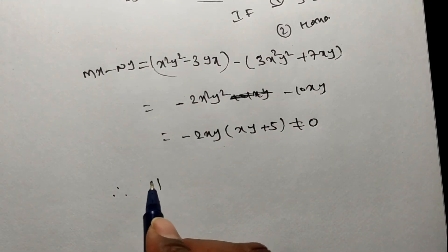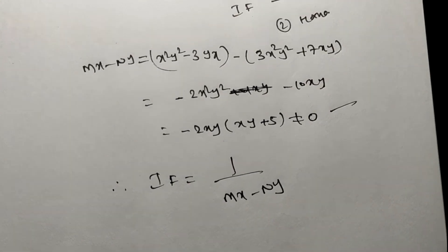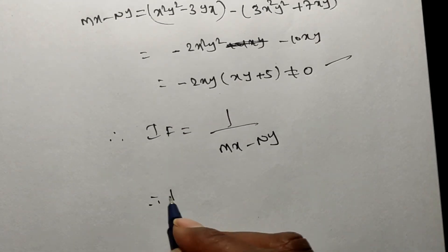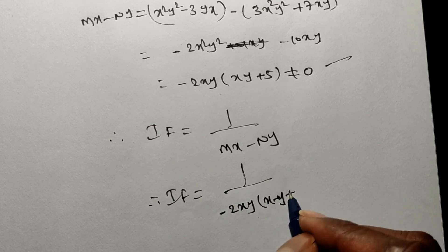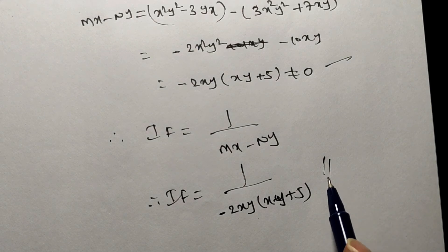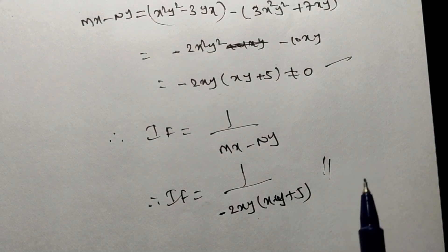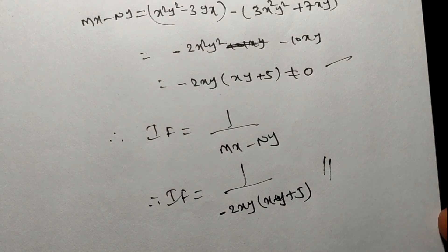Since Mx - Ny = -2xy(xy + 5) ≠ 0, by Rule 3 the integrating factor is 1/(Mx - Ny) = 1/[-2xy(xy + 5)]. Similarly, try to solve the remaining problems. In the next video we will discuss Rule 4. Thank you for watching.